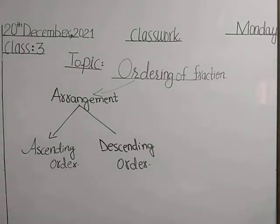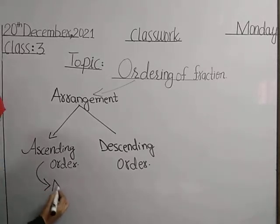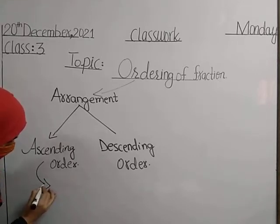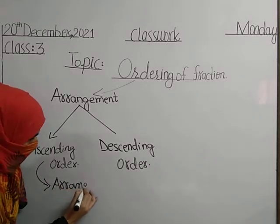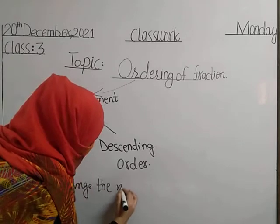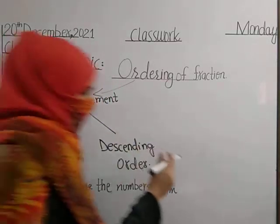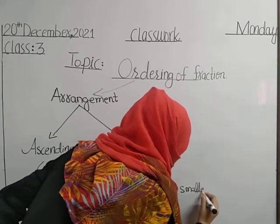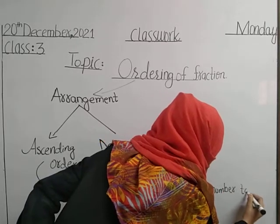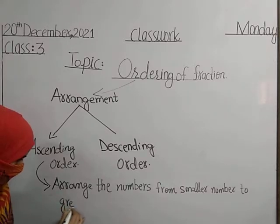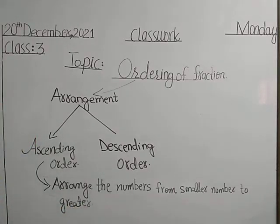Now, Anaya, you tell me what is ascending order? Yes. Ascending order means arrange the numbers from smaller to greater. Arrange the numbers from smaller number to greater — that means ascending order means we arrange numbers from small numbers to large numbers.